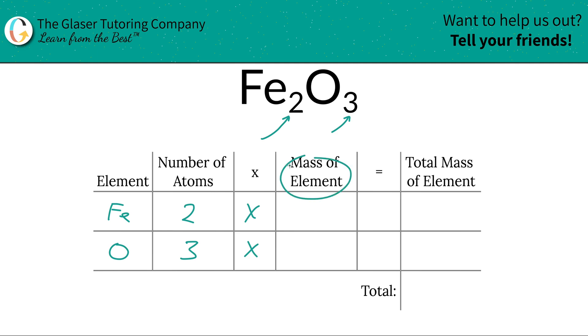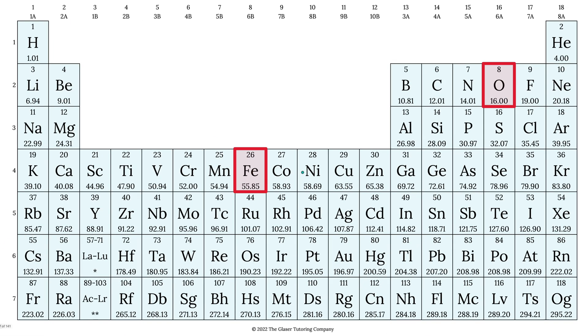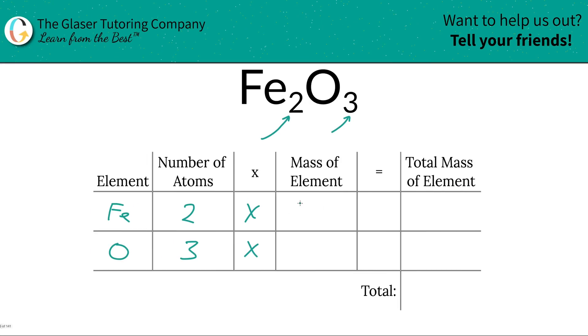Then we're going to multiply those numbers by the mass of each particular element. These masses are found on the periodic table. Hopefully you don't have to memorize them. 55.85 for iron, and oxygen is 16. So let's write them in. 55.85 for iron, and then oxygen is 16.